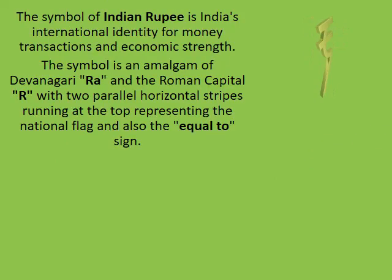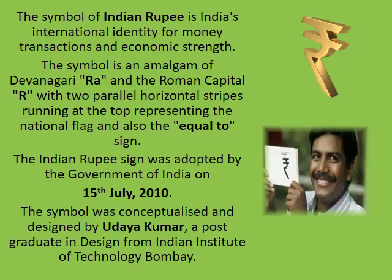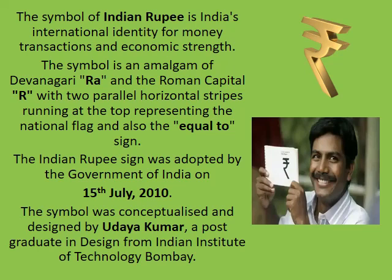The symbol of the Indian rupee is India's international identity for money transactions and economic strength. The symbol is an amalgam of Devanagari 'Ra' and the Roman capital 'R.' It has two parallel horizontal stripes running at the top, representing the national flag and also the equal-to sign. This was adopted on 15 July 2010 and was conceptualized and designed by Udaya Kumar, a postgraduate in design from the Indian Institute of Technology, Bombay.